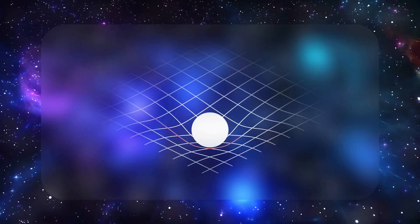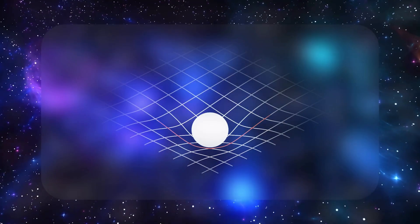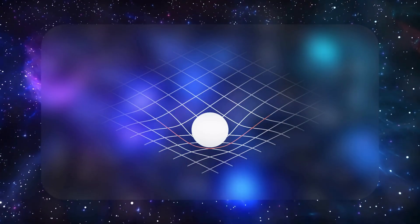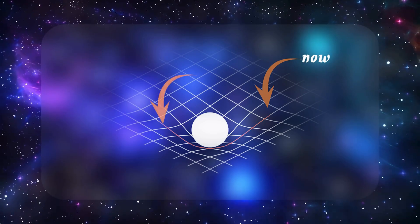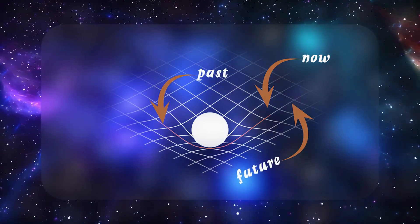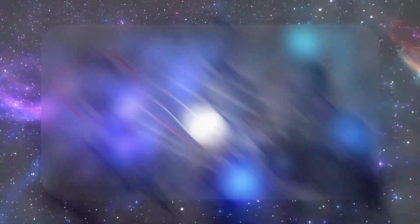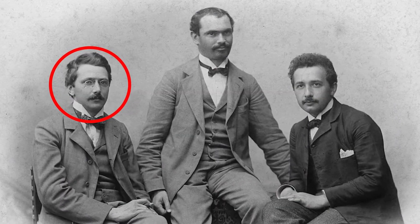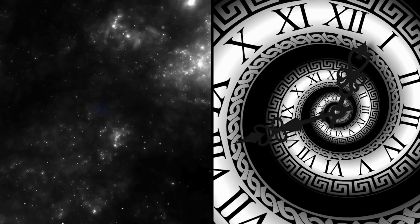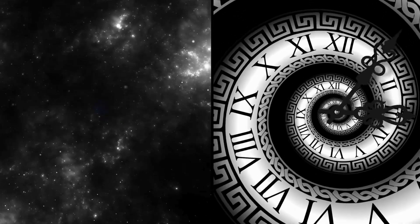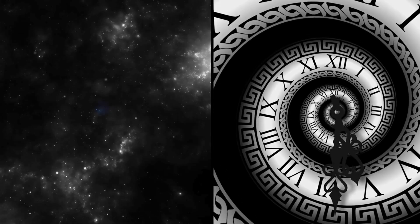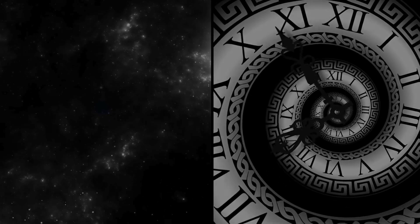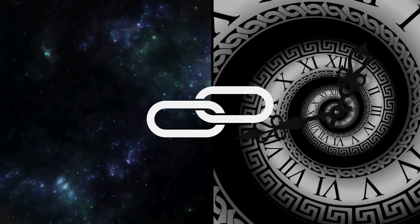We can think of each observer as moving on a personal world line through spacetime. Their notion of now, past, and future depends on their motion. Minkowski, one of Einstein's contemporaries, famously said: Henceforth, space by itself, and time by itself, are doomed to fade away into mere shadows, and only a kind of union of the two will preserve an independent reality.